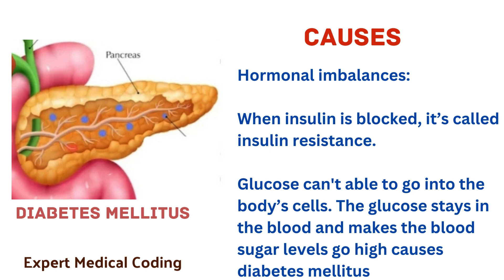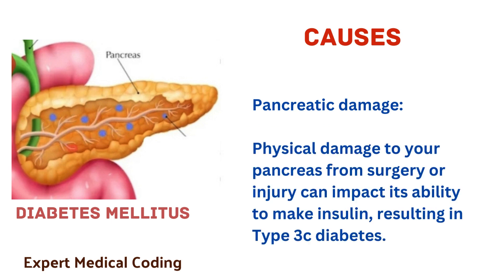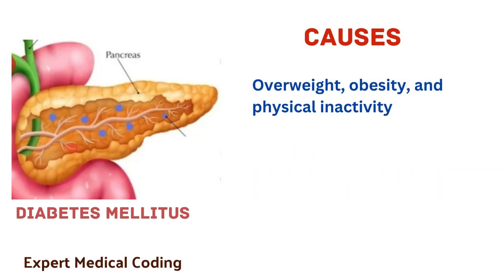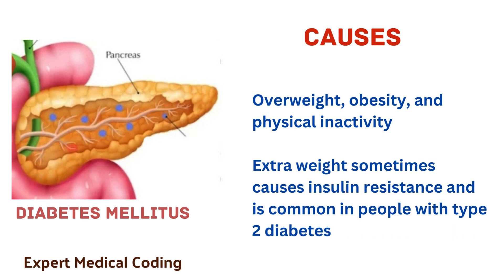The next cause is pancreatic damage. Physical damage to your pancreas from surgery or injury can impact its ability to make insulin, resulting in type 3 diabetes. The next cause is overweight, obesity and physical inactivity. If you are not physically active and are overweight or have obesity, you are more likely to have type 2 diabetes mellitus. Extra weight sometimes causes insulin resistance and is common in people with type 2 diabetes.